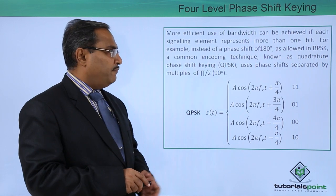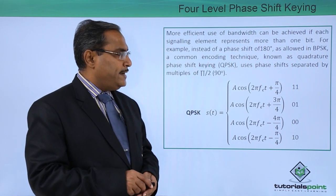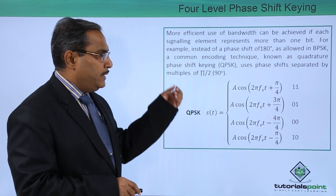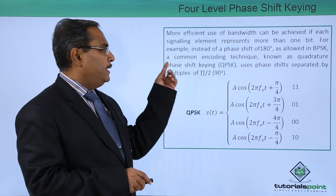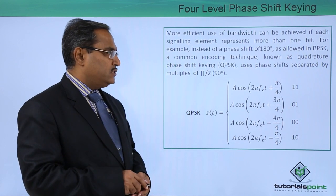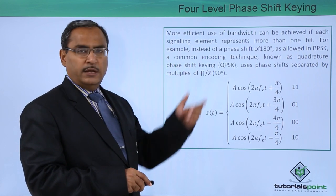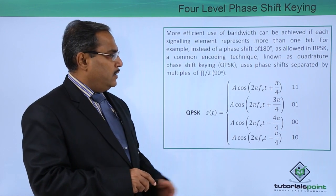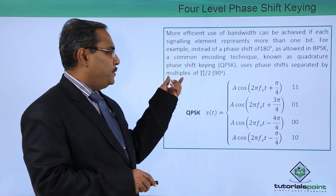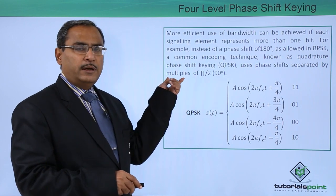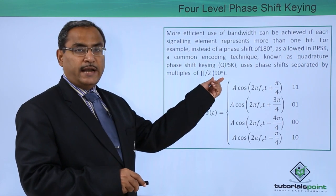For example, instead of a phase shift of 180 degrees as followed in case of BPSK, a common encoding technique known as quadrature phase shifting, in abbreviated form it is QPSK, which uses phase shifts separated by the multiples of π by 2, that is of 90 degrees.